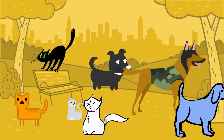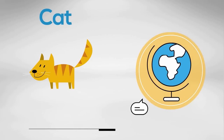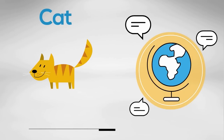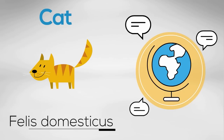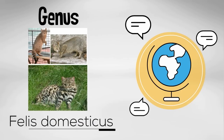Let's dissect a scientific name. A house cat's scientific name is Felis domesticus. The first part describes the genus that a cat belongs to — Felis — and it is always capitalized. All species that are thought to be most closely related are placed together in a genus, for example like these cats.